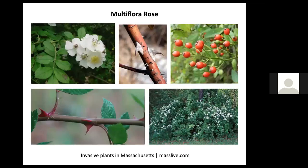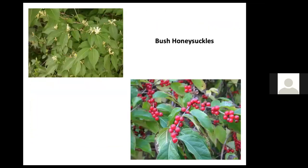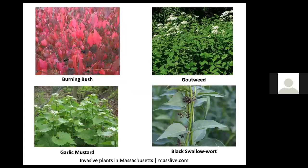Multiflora rose takes over and excludes native plantings — we have far too much of it. Bush honeysuckle is another invasive to watch out for and must also be uprooted. Burning bush may no longer be sold by nurseries; it's attractive for its vibrant fall foliage but that show only lasts a couple of weeks, and it's on the invasive species list. So are goutweed, garlic mustard, black swallowwort, and a number of other plants you can learn about at masslive.com, which also offers suggestions for eradication. The two techniques usually most effective are uprooting and smothering.